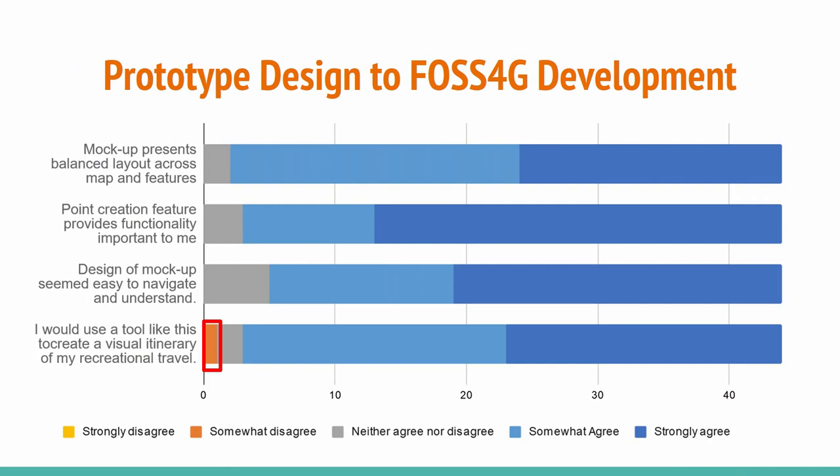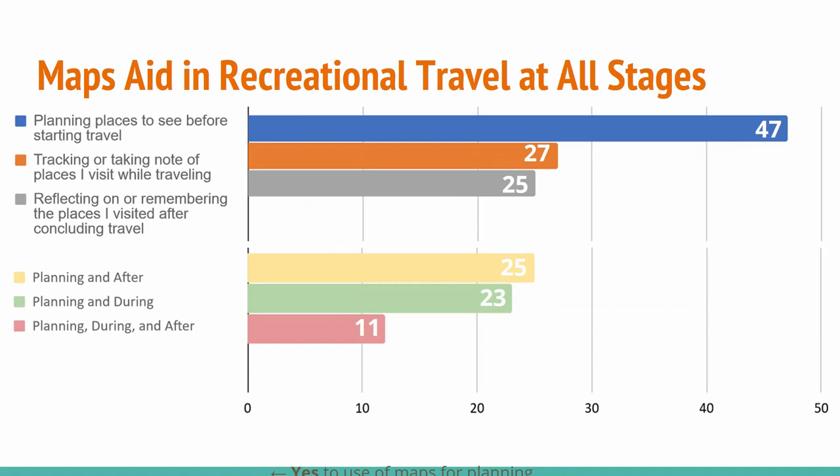More than 82% of users agree that the functionality presented in the prototype mock-up video was in line with their current needs, which presents opportunities for future FOSS4G software development and user survey evaluation to refine the design even further. In fact, several said that they wanted an interactive prototype to try out for themselves, which is our next step to gather more feedback on development and assess the utility of the functions discussed so far. These include a balanced layout with a map being the primary focus within the interface and a point data creation feature that records key travel details. We found that maps were used at all three stages — before, during, and after travel — to support travel planning.